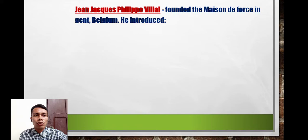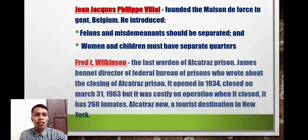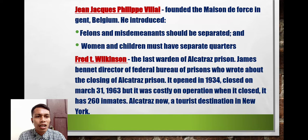Jean-Jacques Vilain founded the Maison de Force in Belgium, introducing the idea that felons and misdemeanants should be separated, and that women and children must be housed in separate quarters. Fred T. Wilkinson was the last warden of Alcatraz prison. James Bennett, director of the Federal Bureau of Prisons, wrote about the closing of Alcatraz. It opened in 1934 and closed on March 31, 1963, and now serves as a tourist destination.